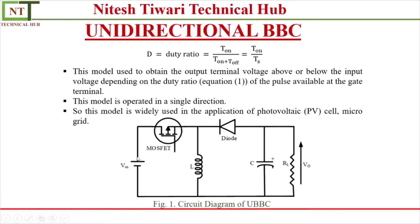What is the application of this converter? This converter is used where you require a fixed voltage — if your input voltage changes, this converter is very useful. Or if your input voltage is fixed, you can get a variable output voltage depending on your requirement. This converter is widely used in photovoltaic cells, microgrids, electric vehicle charging stations, and electric vehicle drives.